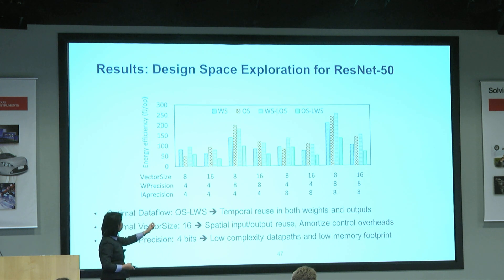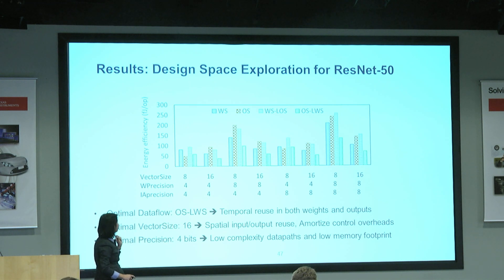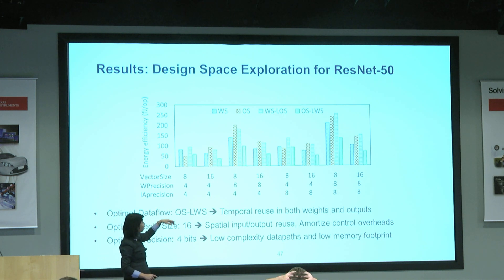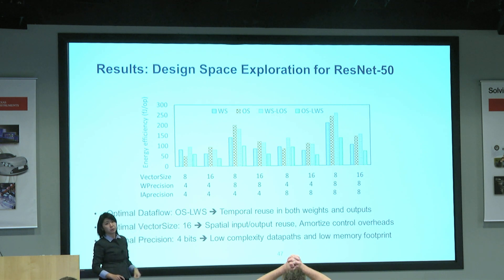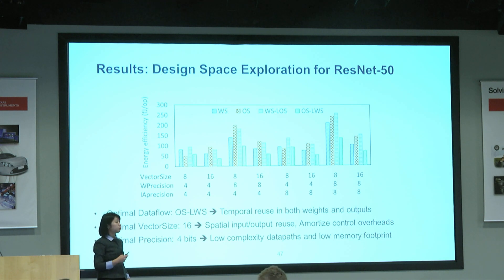In general, thinking about dataflows, what we find is that the rightmost one — the output stationary and lower local weight stationary — is actually the most optimal across all the different scenarios. Sometimes it's quite significant; we're observing almost 2x energy efficiency improvement because it's actually able to capture the reuse for both data types.